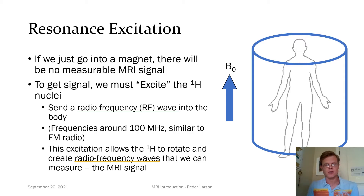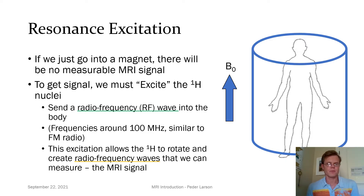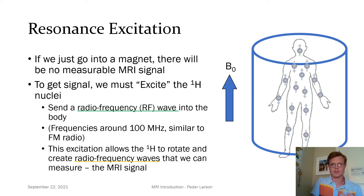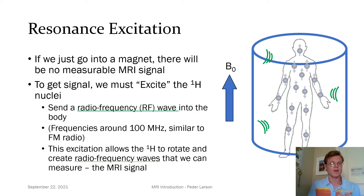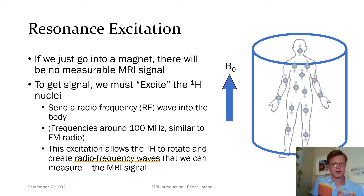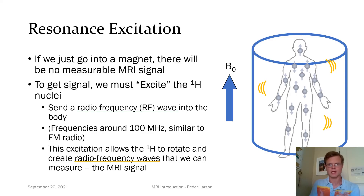Before we can receive signal with MRI, we need to do something called resonance excitation. Because if you or I were just to go into a magnet, there would actually be no measurable MRI signal. To get the signal, we must first excite our hydrogen nuclear spins. To do this, we send a radio frequency wave into the body. We call this a radio frequency wave because the frequencies we use are around 100 megahertz, similar to the frequencies of FM radio. This radio frequency excitation causes the hydrogen nuclear spins to rotate and actually create their own radio frequency waves that we can then measure. This forms the basis of the MRI signal — we're sending in radio frequency energy, and radio frequency energy is coming back out.